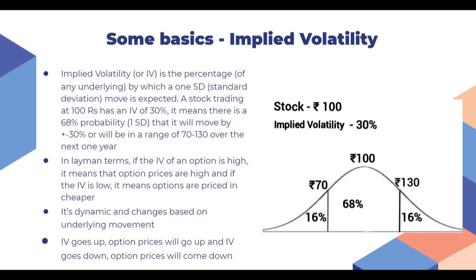I am going to cover some basics before I start explaining how to identify vol shot trades. First of all is implied volatility. Implied volatility or IV is the percentage of any underlying by which a one standard deviation move is expected.